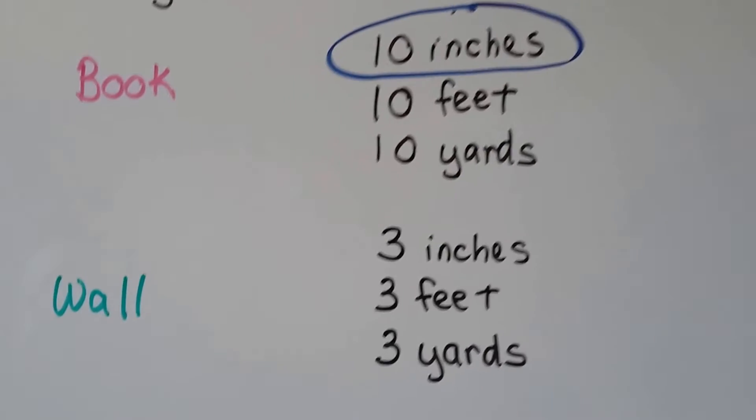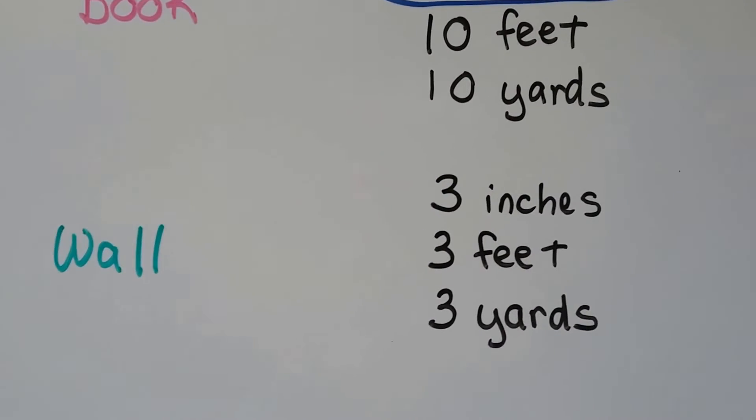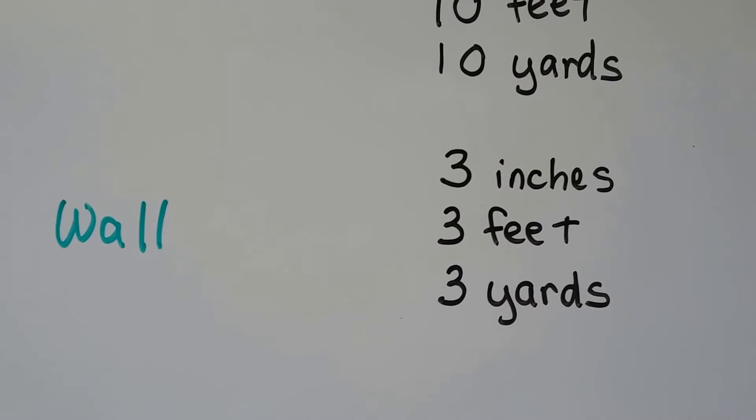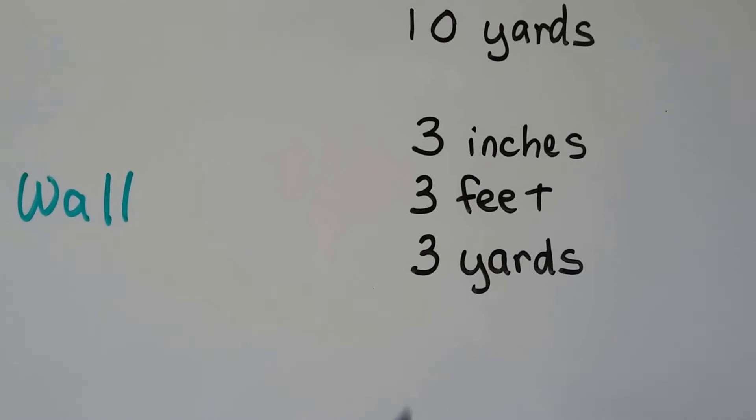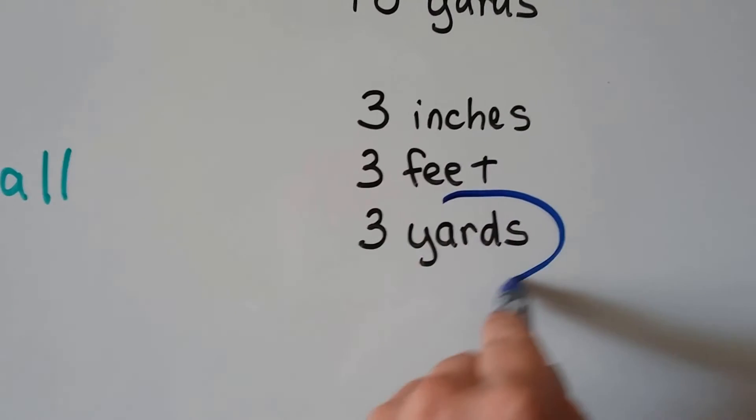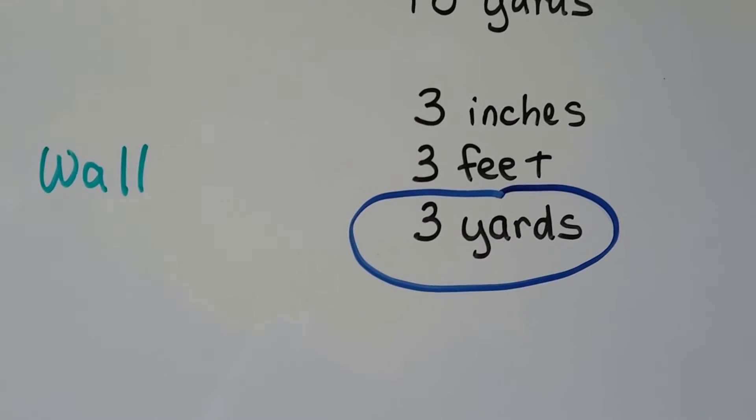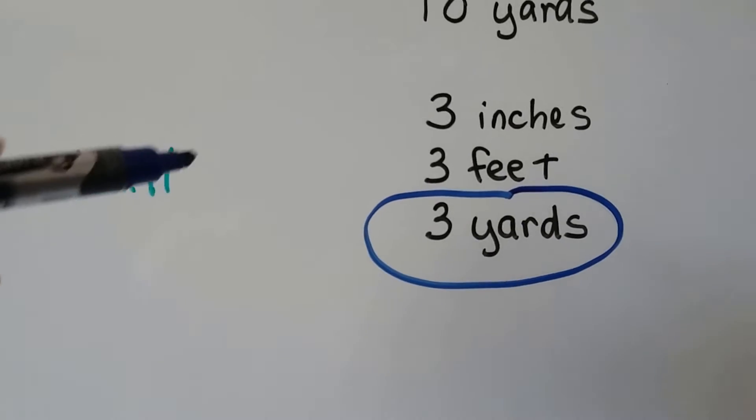What about a wall? Do you think a wall would be three inches tall, three feet tall, or three yards tall? Well, if you said three yards, you're right, because each yard is three feet, isn't it? So that would be three plus three plus three. That would be about nine feet up for a wall. That would be about right.